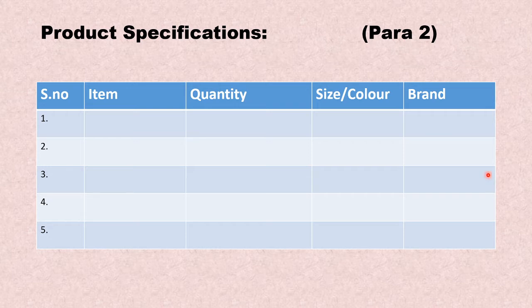Five items in the table are more than enough. Don't go beyond five, otherwise it will become cumbersome. Keep it to five or fewer items — five is suitable.